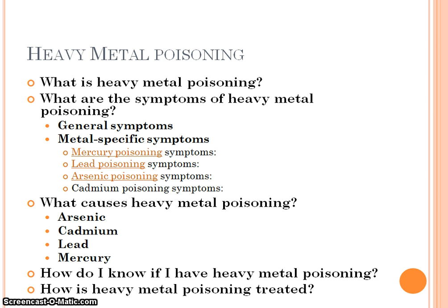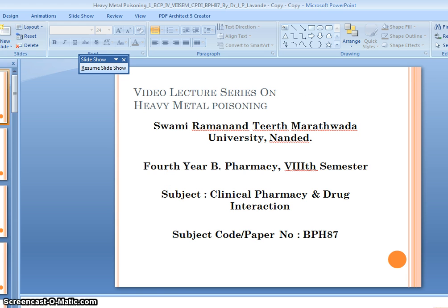Heavy metal poisoning — this topic will cover the following subtopics: what does heavy metal poisoning mean; what are the symptoms associated with heavy metal poisoning, including metal-specific symptoms and general symptoms. Metal-specific symptoms include mercury, lead, arsenic, and cadmium poisoning symptoms. We will also see what causes heavy metal poisoning, what one should know if one has metal poisoning, and what treatment is associated with poisoning cases.